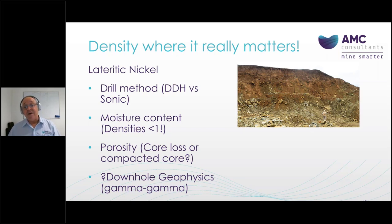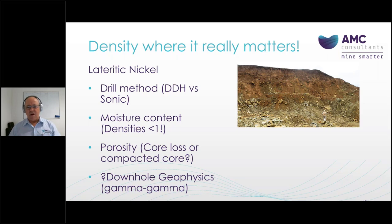In laterite profiles you can get compaction of diamond core and core loss, so you have to be smart about what samples you collect. Can you use downhole geophysics to help with density? In general terms, downhole density gives variable results. In coal it's used extensively and reliably for seam picking, but in most examples I've seen it's very difficult to get a good gamma-gamma to density conversion because of moisture content, porosity issues, and difficulty keeping the tool against the side of the hole. Gamma tools require care.